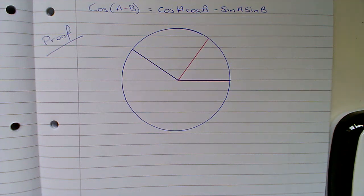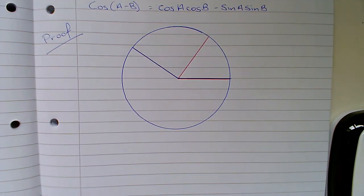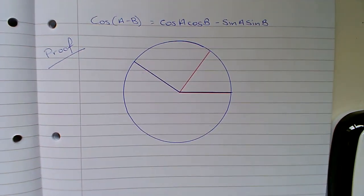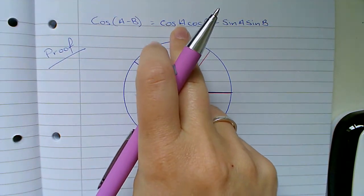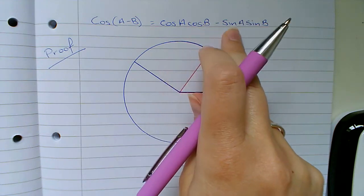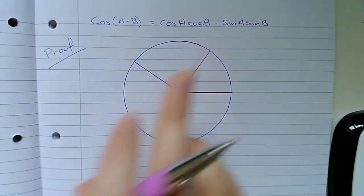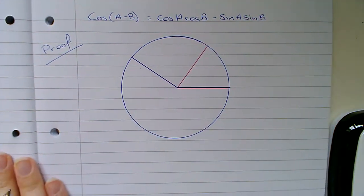I'm going to go through a proof with you today which is the cos(a - b) proof, and what you have to prove is that cos(a - b) is equal to cos(a)cos(b) minus sin(a)sin(b).